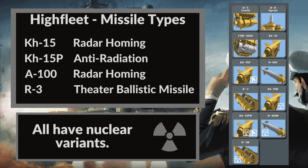We've got the KH-15, the KH-15P, the O-100 and the R-3. All these have different activation types: radar homing for the KH-15, anti-radiation for the KH-15P, radar homing for the A-100, and the R-3 is a theatre ballistic missile. It's important to note all these have nuclear variants, which you can see on the picture of the missile.